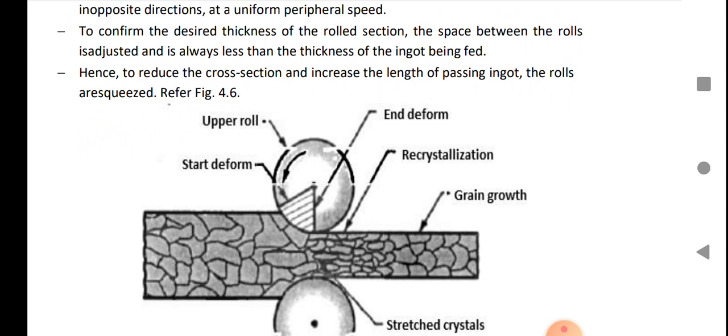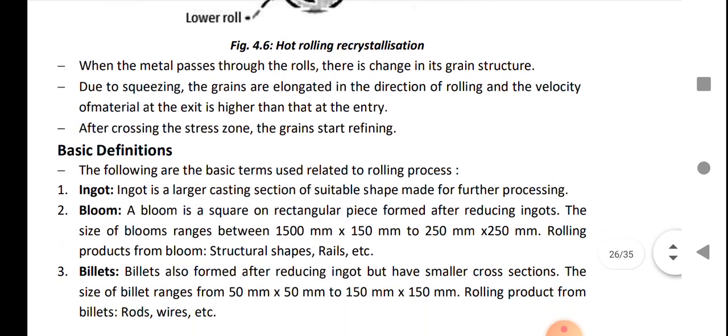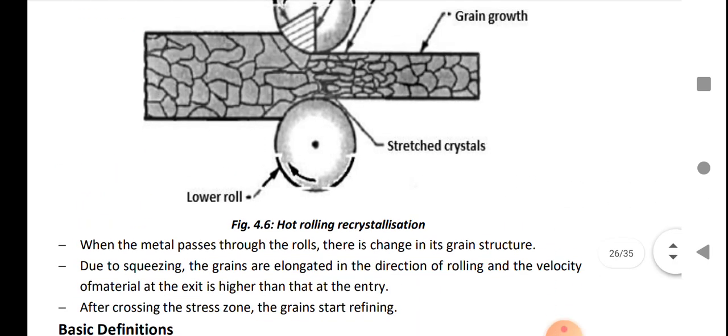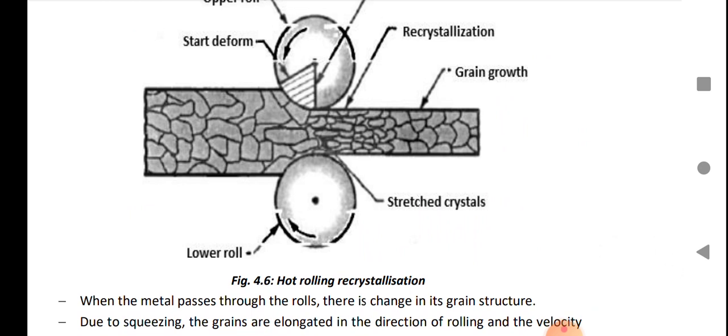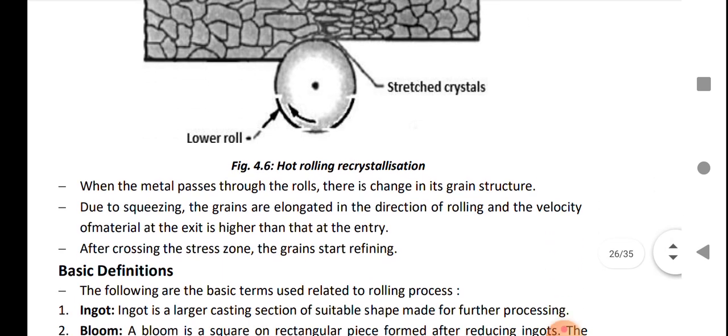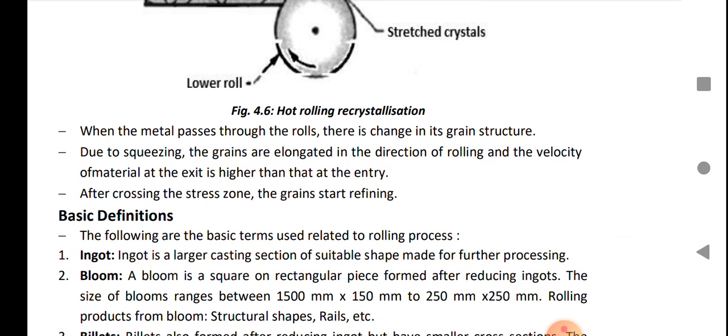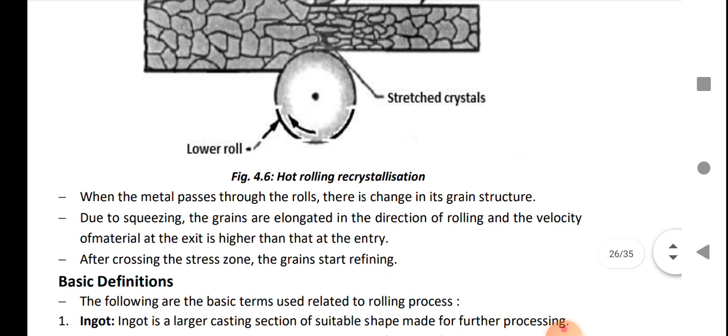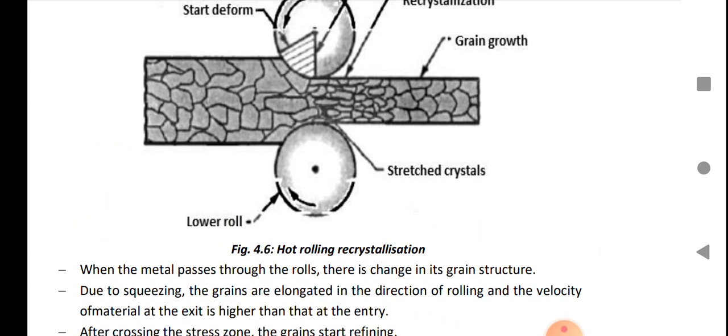In this process, the length of the billet is increased but cross-section is reduced. When the metal passes through rolls, there is a change in grain structure. As you see in this figure, the grains of the structure are compressed after the operation. Due to squeezing, the grains are elongated in the direction of rolling, and velocity of the metal at the exit is higher than that at the entry.